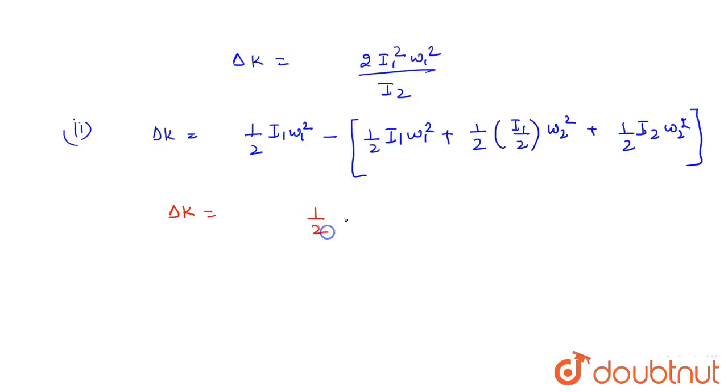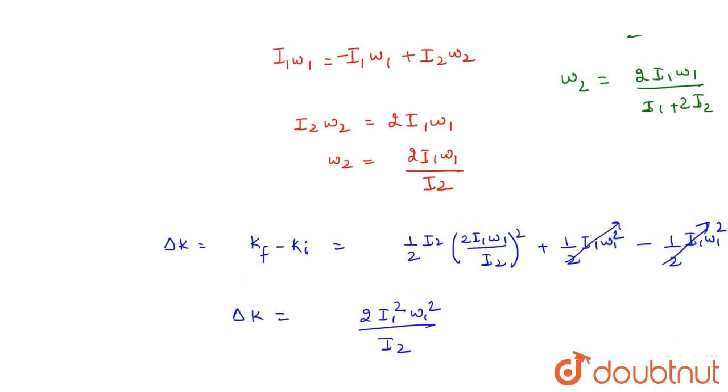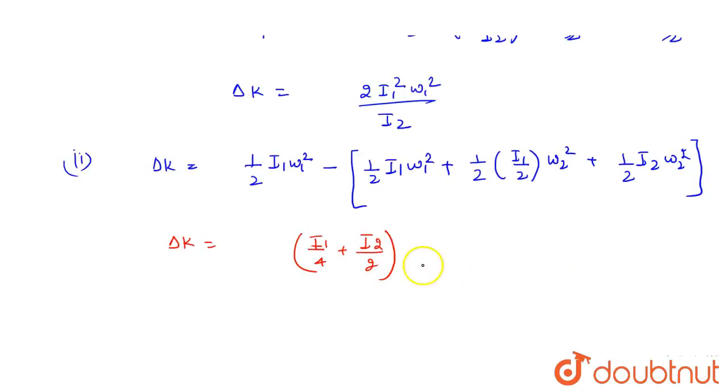The change in kinetic energy will be 1/2 times i1/4 omega2 squared, i1/4 plus i2/2, multiplied by omega2 squared, which equals 2 times i1 omega1 divided by i1 plus 2i2 all squared.